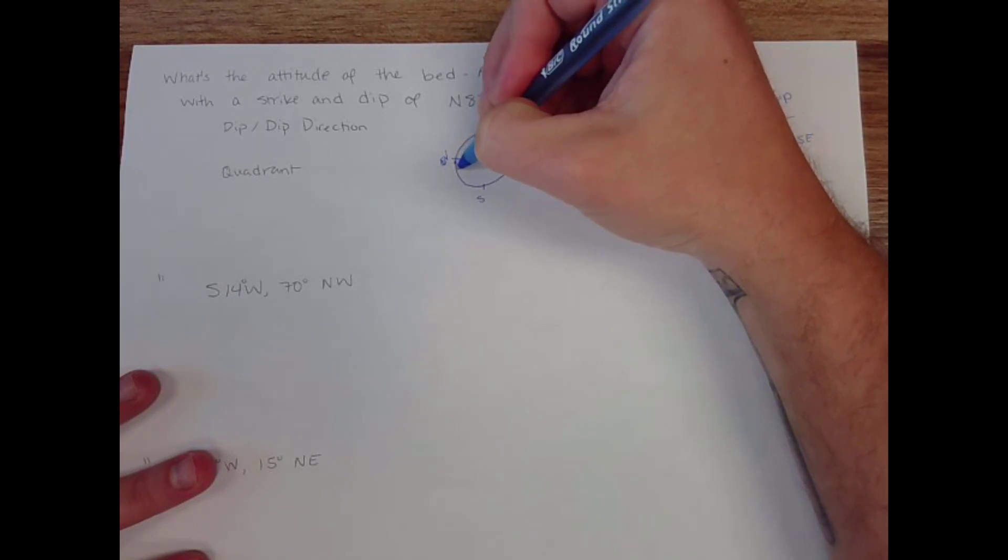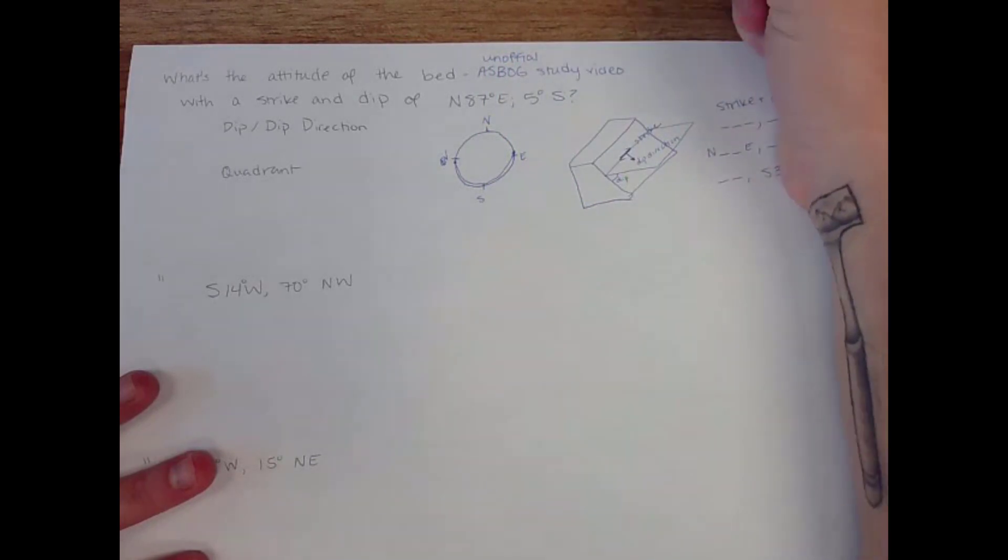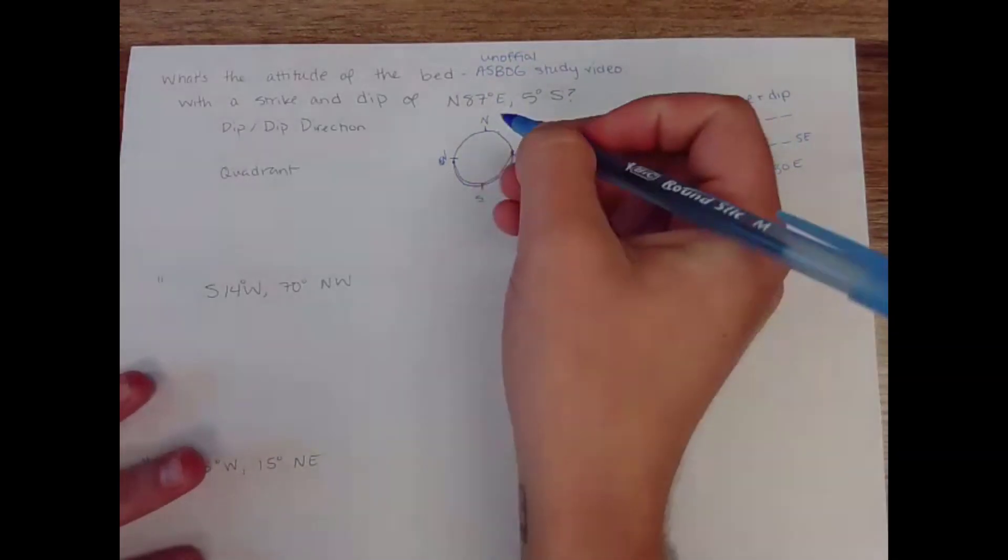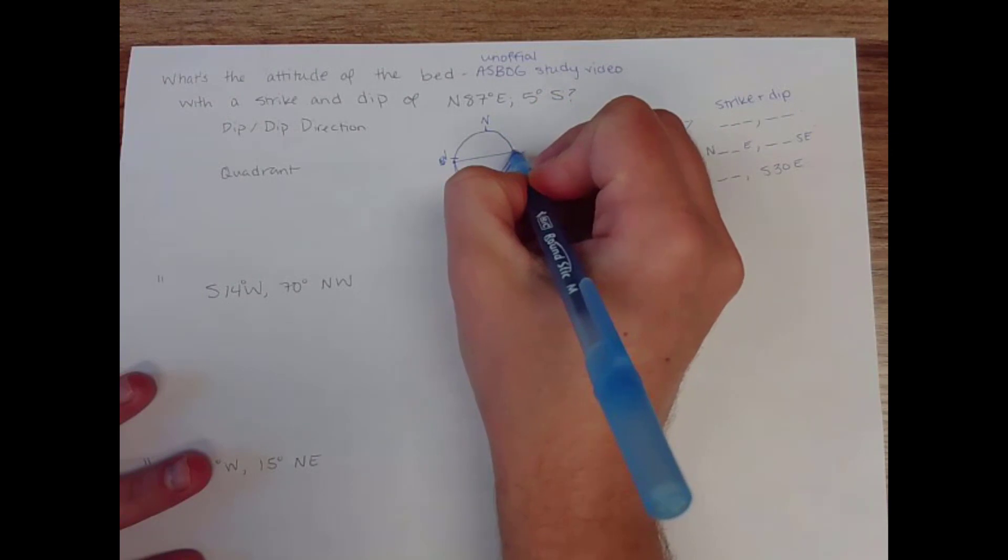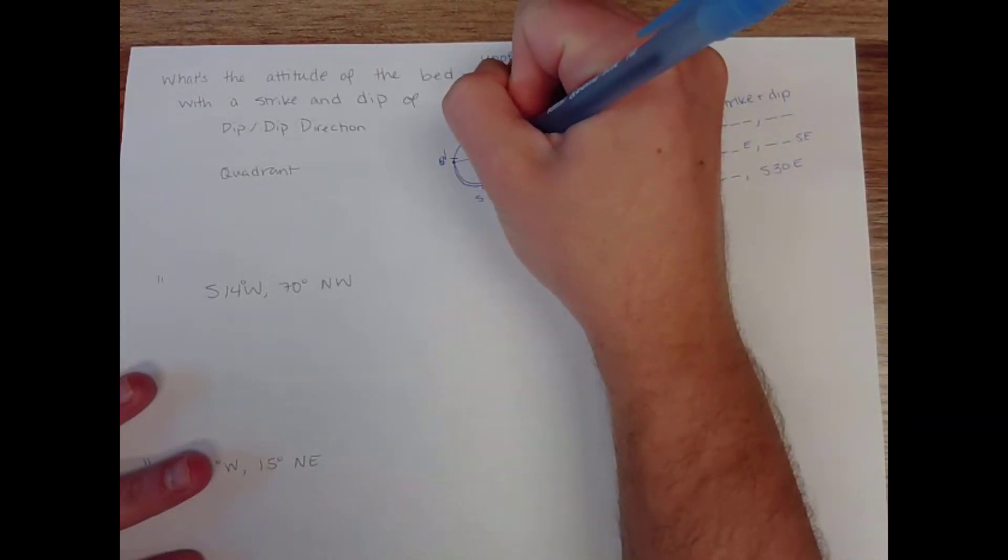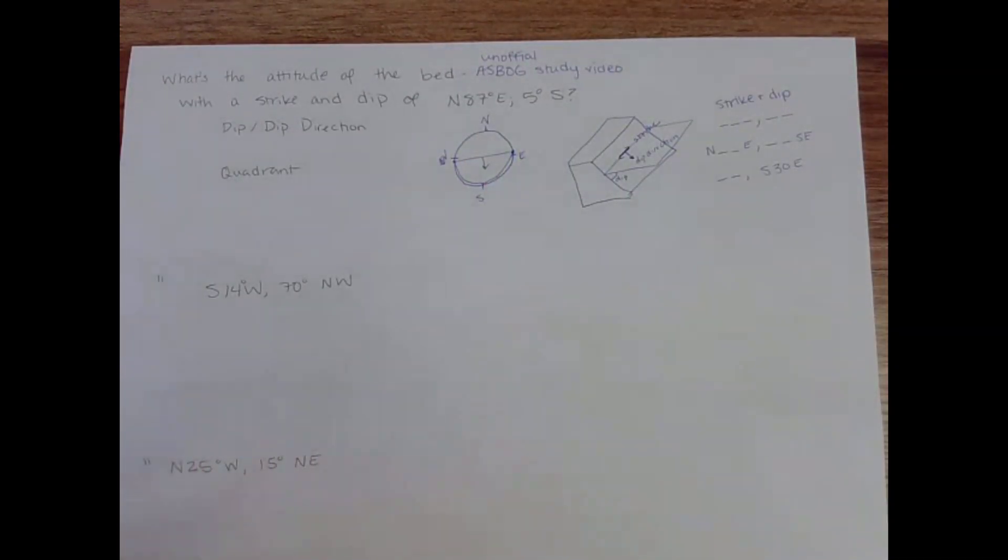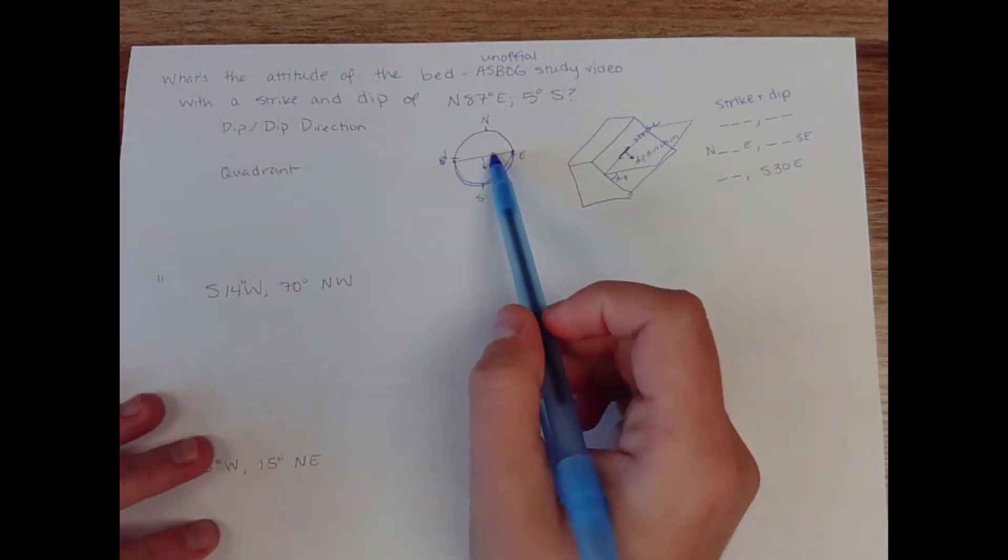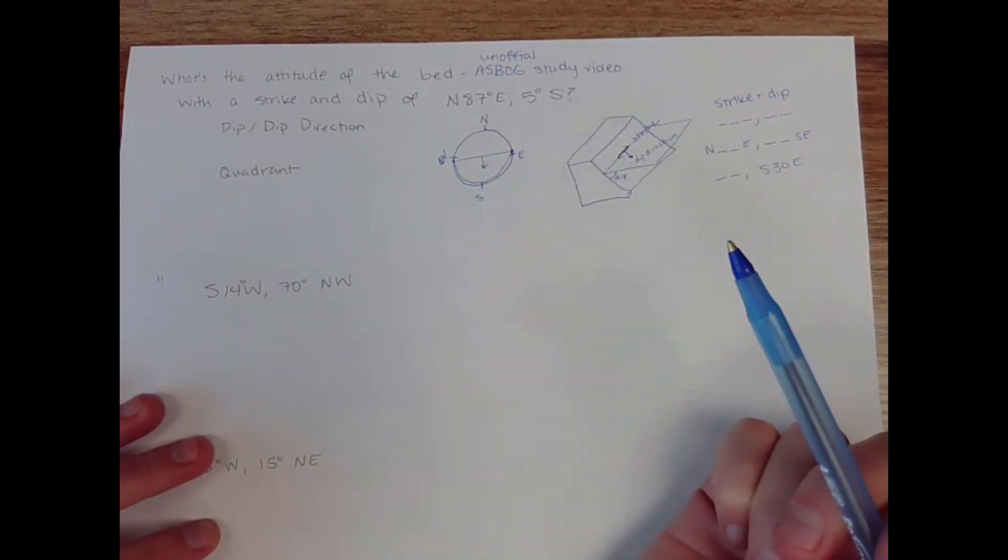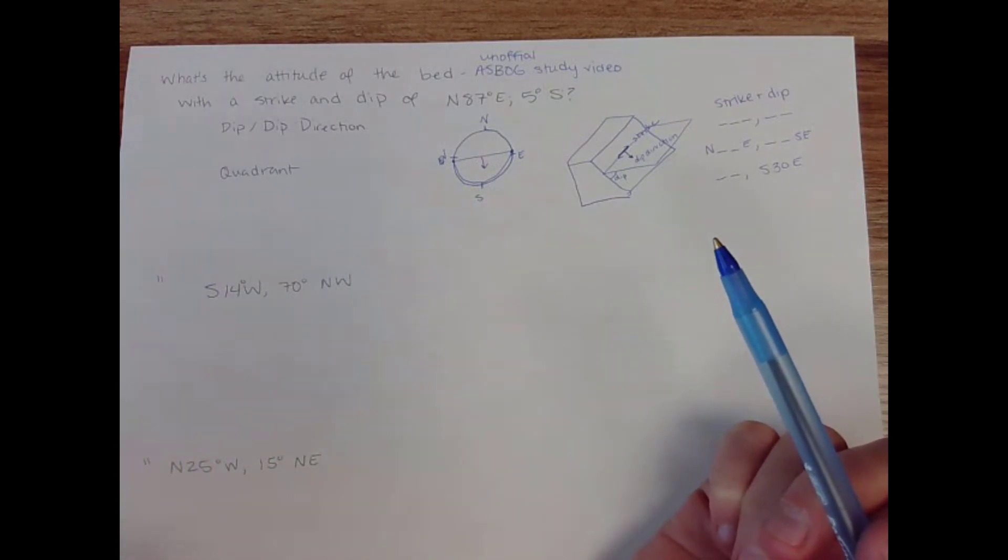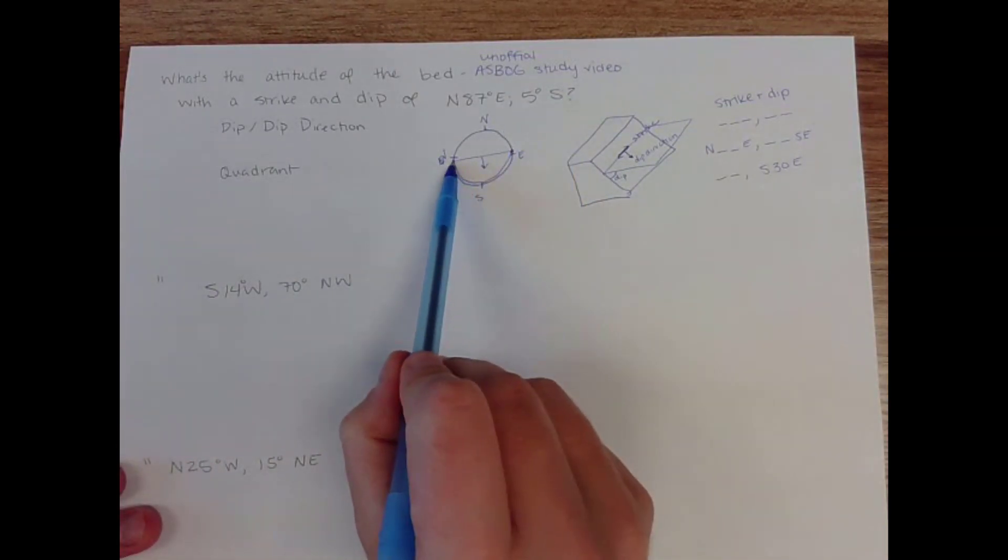And we're dipping five degrees to the south. So you don't have to draw in the full arc as if you were plotting it on a stereo net, but I'm just going to do it to keep myself in line. So that's the strike of my bed. That's the dip of my bed, and it's five degrees in that direction. It is going to be worth drawing this little picture. You don't have to draw the arc in, but just draw in your strike, draw in your dip direction.